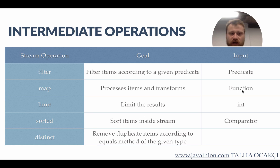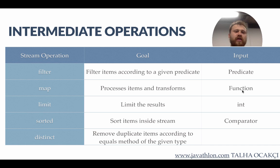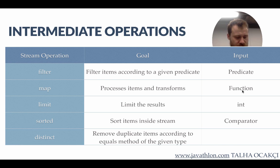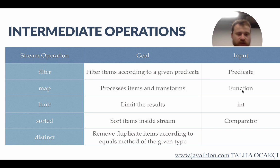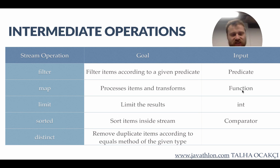But when you reach a terminal operation, you will yield a result other than a stream — this may be a collection or any other regular object. After reaching a terminal operation, you cannot process the data anymore. This is so important because the result will be something other than a stream. Let's list the intermediate operations. All of these methods are methods of the stream class. Filter is used for filtering items according to a given predicate, so the input is a predicate. The map method processes items inside the stream one by one and transforms them into something else. The limit method limits the results and is important because it supplies lazy evaluation — when we reach the limit of 10, we do not process the remaining part of the stream.